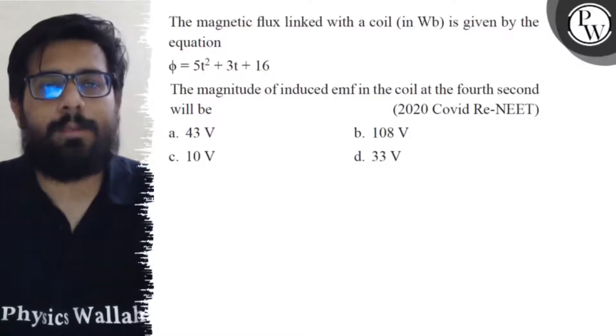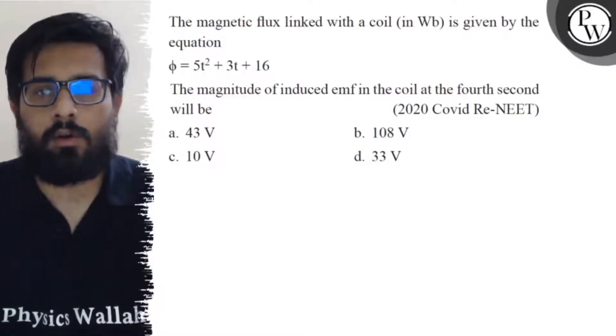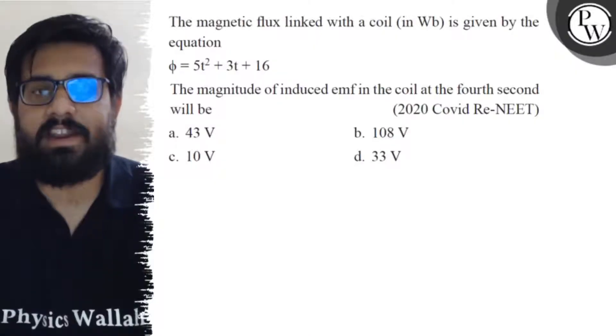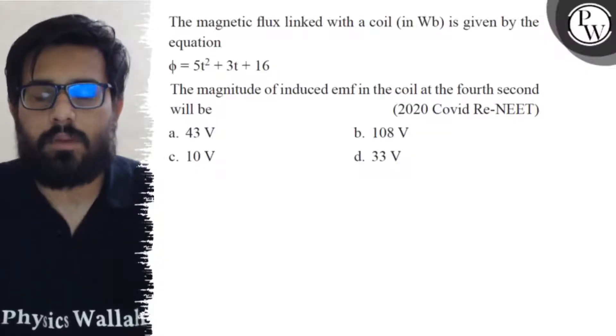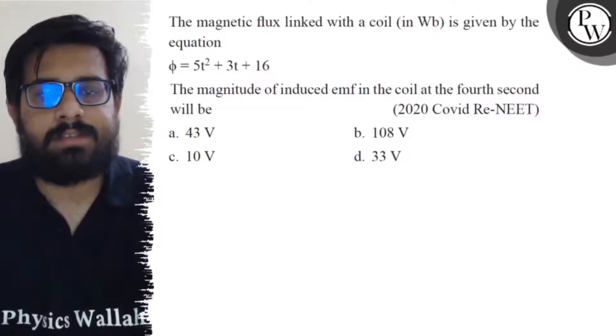Hello bachos, so let's see the question. The magnetic flux linked with a coil is given by the equation φ = 5t² + 3t + 16. The magnitude of induced emf in the coil at the fourth second will be: your first option is 43 volt, second option is 108 volt, your third option is 10 volt, and your fourth option is 33 volt.